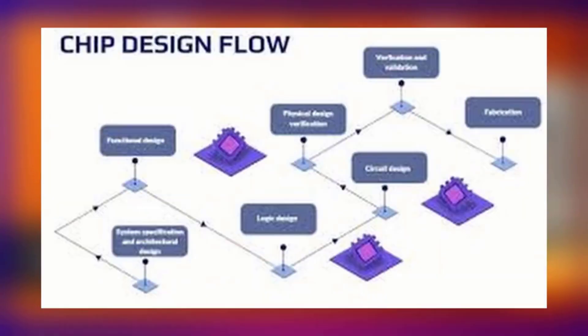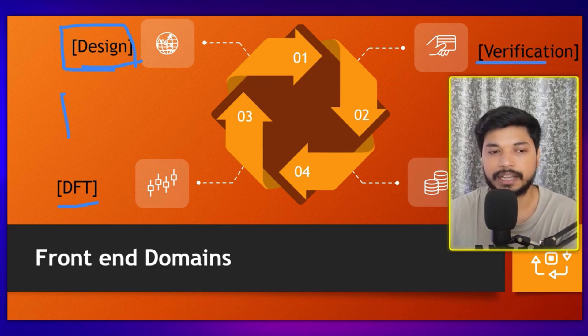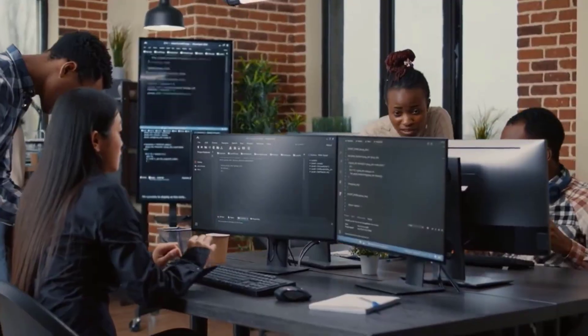As the name suggests, a Design Engineer designs integrated chips. For example, if you have to design a circuit that takes input A and gives output Y, that is the work of the Design Engineer. They take the requirement from the company or client, understand everything, and then start working on the design.